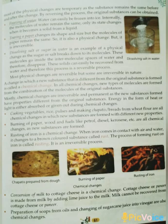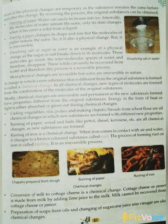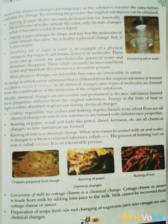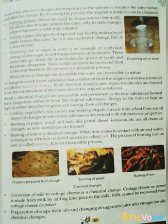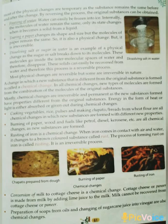Then, chemical change. A change in which a new substance that is different from the original substance is formed is called a chemical change. Mostly, chemical changes are irreversible and permanent as the new substances formed have properties different from the original substance. Energy in the form of heat or light is either absorbed or given out during chemical changes. For example, cooking vegetables, burning of paper, wood and fuels like petrol, diesel, kerosene, rusting of iron, conversion of milk to cottage cheese, and preparation of soap from oils — these are all chemical changes.